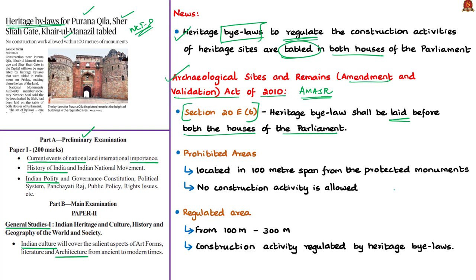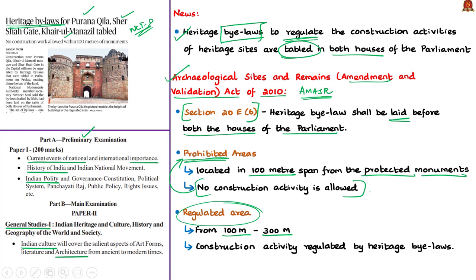The AMASR Act of 2010 describes prohibited areas and regulated areas near protected national monuments. Prohibited areas are those located within a 100-meter radius from the protected monument. The area from 100 meters to 300 meters away from the protected monument is called the regulated area. No construction activity is allowed within a 100-meter radius, but building work from 100 to 300 meters from the heritage structure is regulated by the bylaws.